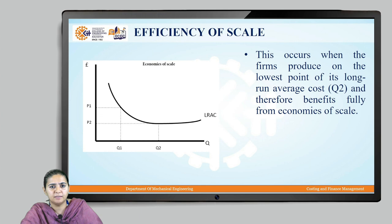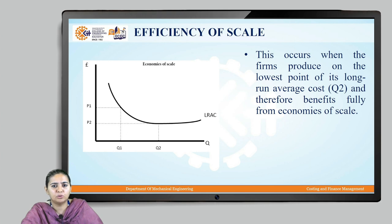The next type is efficiency of scale. This occurs when the system is able to produce at the lowest point of its long run average cost. Long run average cost is the average cost incurred by an organization over a longer period of time. On the graph, quantity Q1 is at average price P1, but quantity Q2 shows the long run average cost where the average cost remains constant for a longer period — that is the point where the company benefits from economies of scale.